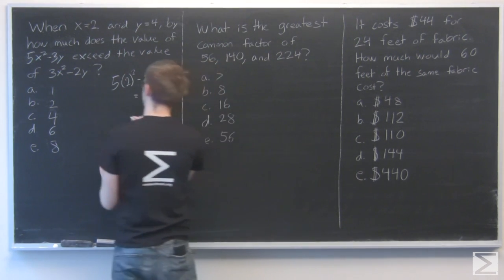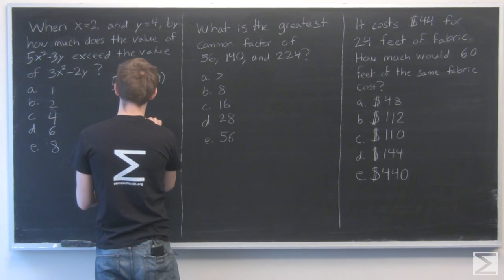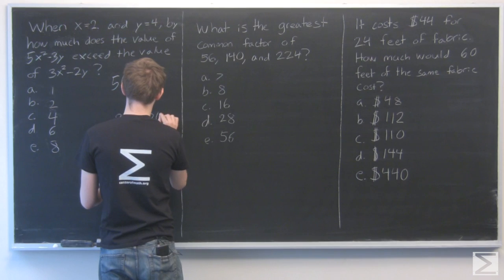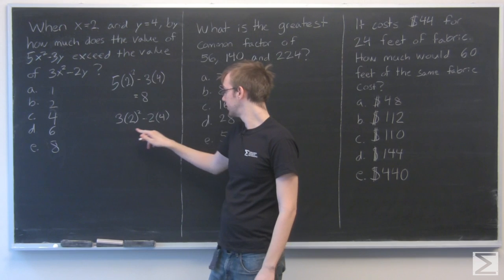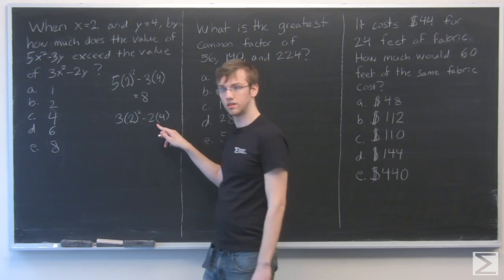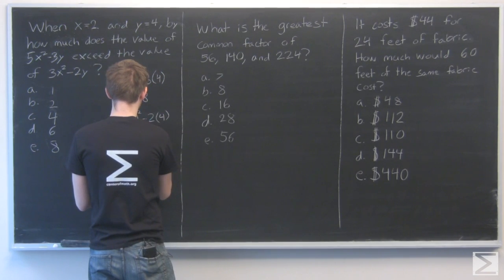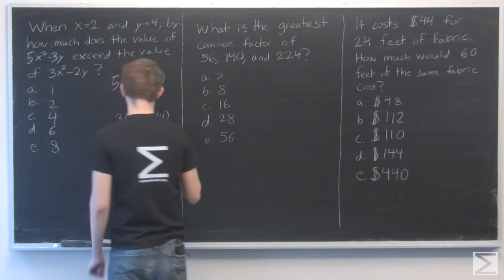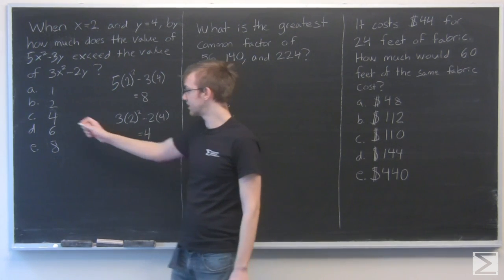And 3x squared minus 2y. 3 times 2 squared, that's 3 times 4, that's 12. Minus 2 times 4 is 8. So we get 4. And 8 minus 4 is 4. So the answer is C.